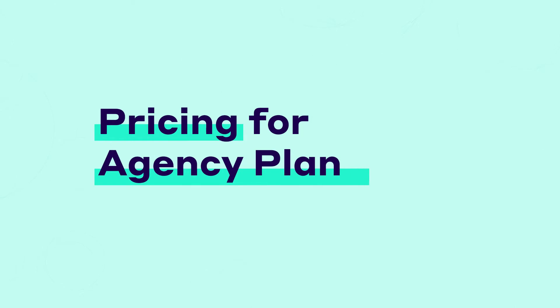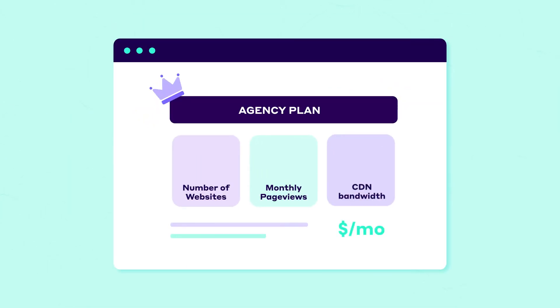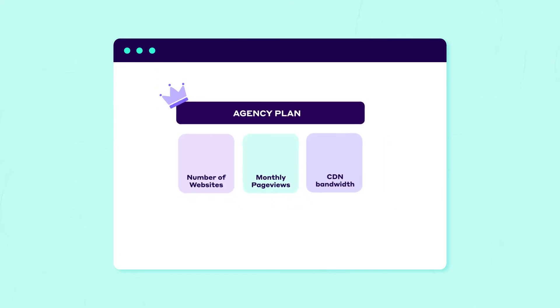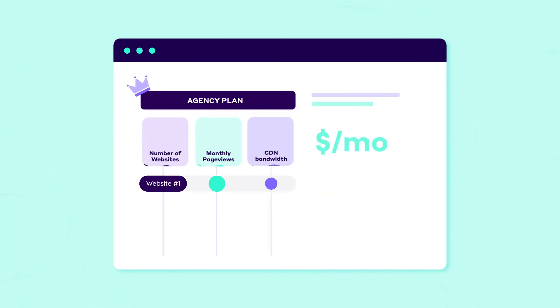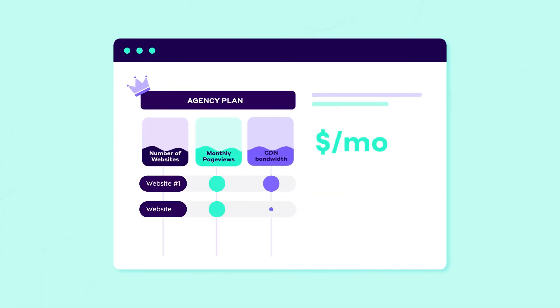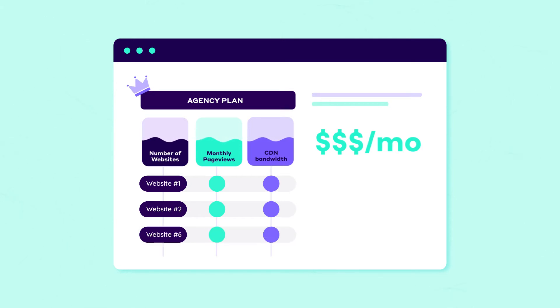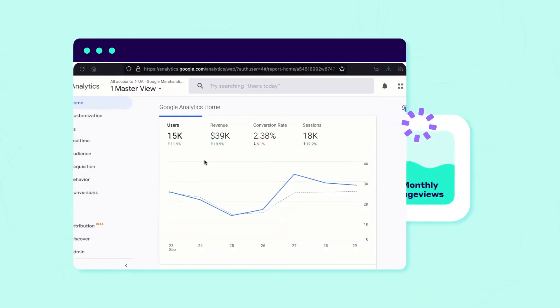Let's dive a bit deeper into the pricing for agency plans. You can think of your agency plan as a master subscription. All websites in your agency account use resources from this master subscription. Here's how we calculate the required resources for your agency plan. For each site, NitroPak's pricing is determined by the number of page views and the CDN bandwidth generated every month.